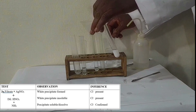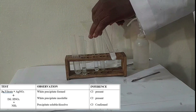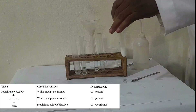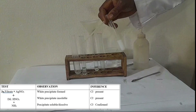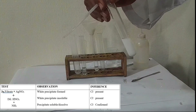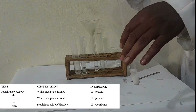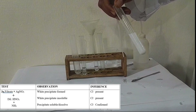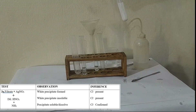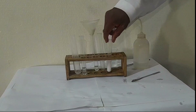The precipitate remains after adding HNO3 — there's no reaction. But on addition of ammonia solution, we're expecting the precipitate to dissolve. Let's add excess ammonia. You can see the precipitate is dissolving. This shows the presence of chloride ion.